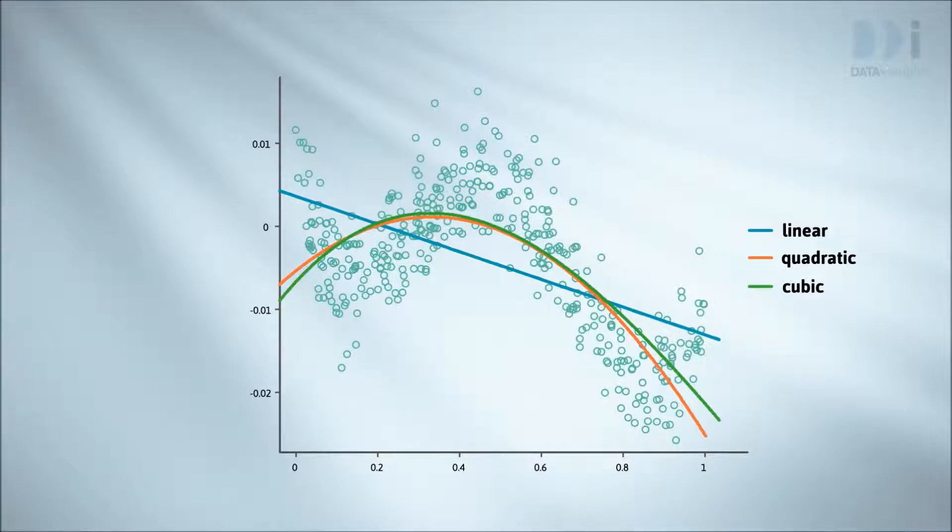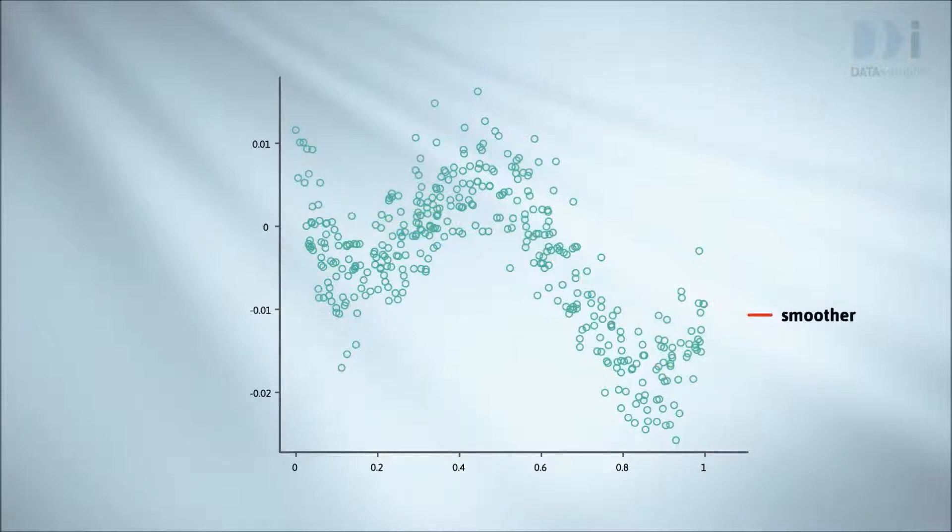But the sets of shapes we've seen is not sufficient to capture all of the trends we see in data. An alternative is to put on a smoother. Smoothers are even more flexible and take on an even greater variety of shapes. You can control how flexible the smoother is using a slider.